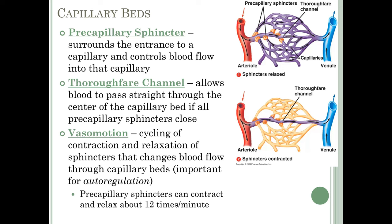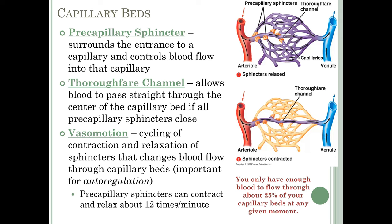Precapillary sphincters normally contract and relax about 12 times per minute, changing blood flow through various capillary beds so blood cycles through different beds. This is important because you only have enough blood to flow through about 25% of your capillary beds at any one moment. Having vasomotion allows your blood to cycle through the different capillary beds so that all body cells can eventually have access to blood — they just have to wait their turn.